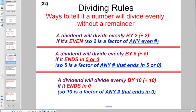And we lastly told you that a dividend will divide evenly by 10 if it ends in 0. So 10 is a factor of any number that ends in 0.